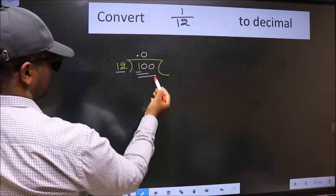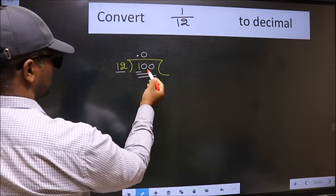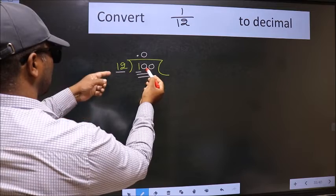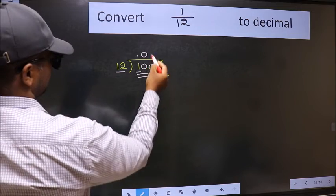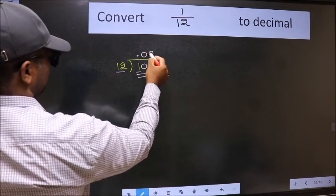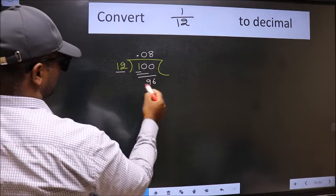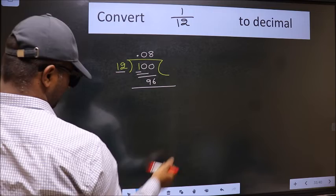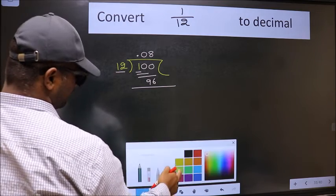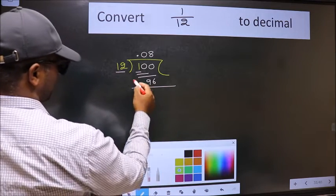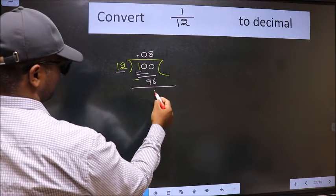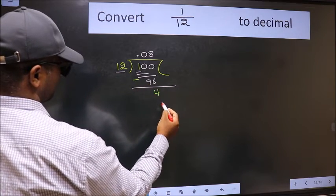Now we have 100. A number close to 100 in the 12 times table is 12 × 8 = 96. Now we subtract and we get 4.